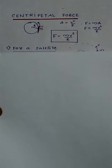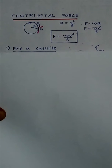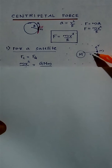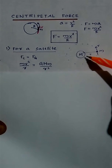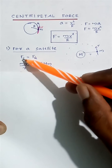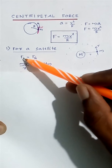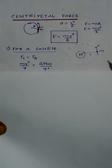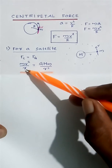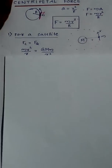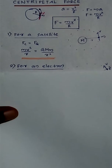The first case is for a satellite. Suppose a satellite of mass m is revolving around a planet of mass M, and the distance between their centers is r. In order to keep this satellite in its circular path, there must be a centripetal force. Here, the necessary centripetal force mv²/r is provided by the gravitational force of attraction between the two masses, so mv²/r = GMm/r².